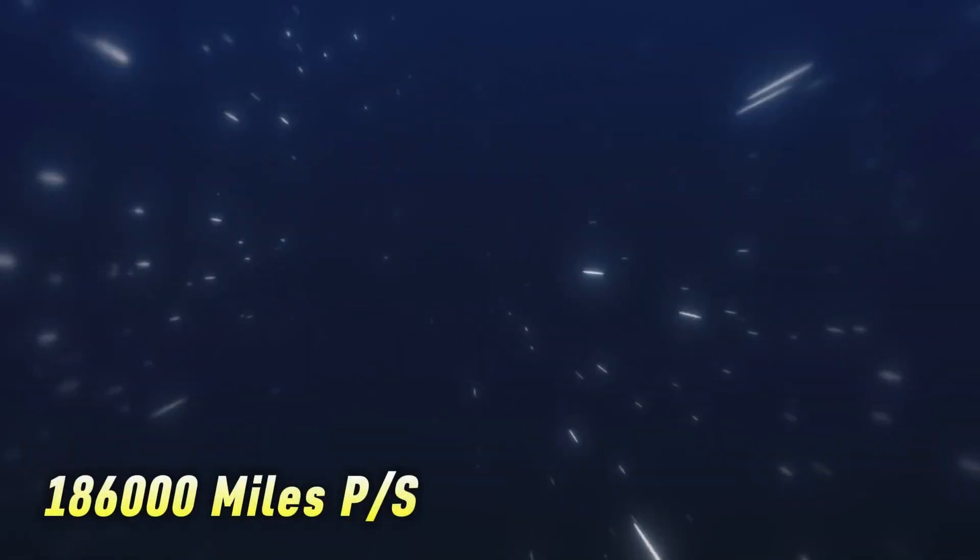The light travels super fast, about 186,000 miles per second. So it only takes about 8 minutes and 20 seconds for light to zoom from the Sun to Earth.